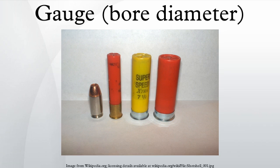The most common size is 12-gauge, with up to 50% of the overall shotgun market in the United States. The 20-gauge shotgun is favored by shooters uncomfortable with the weight and recoil of a 12-gauge gun, and is popular for upland game hunting. The next most popular sizes are 28-gauge and .410 caliber. The 10 and 16-gauge, while less common, are still readily available.